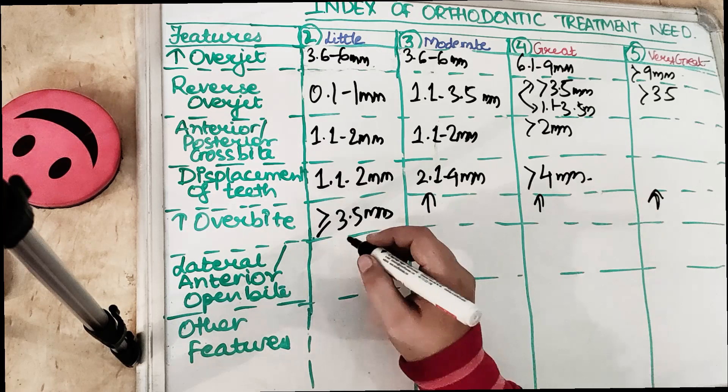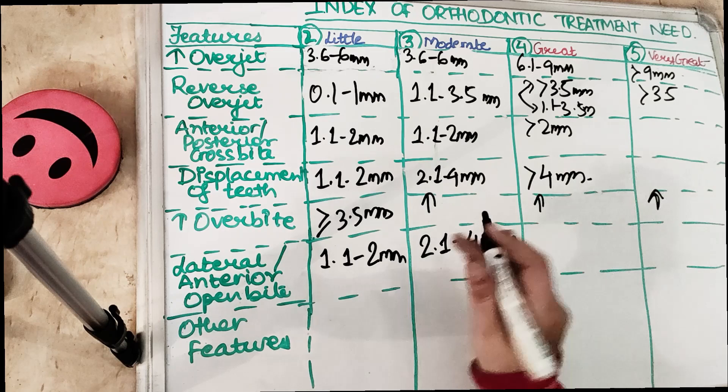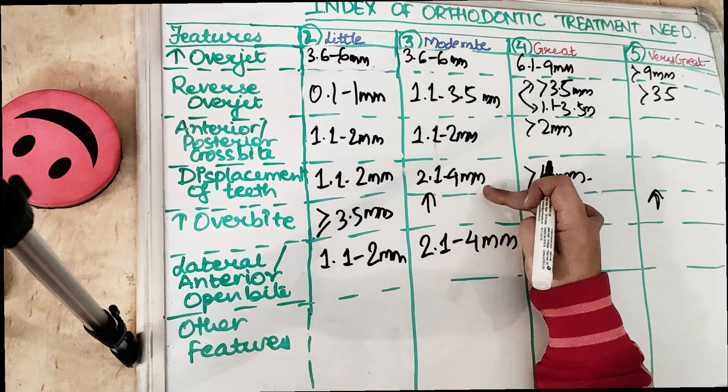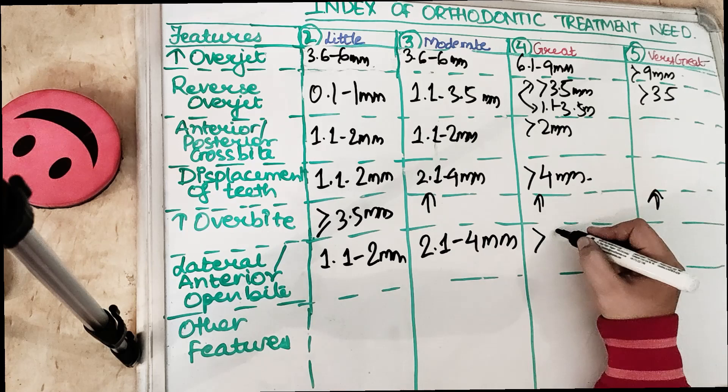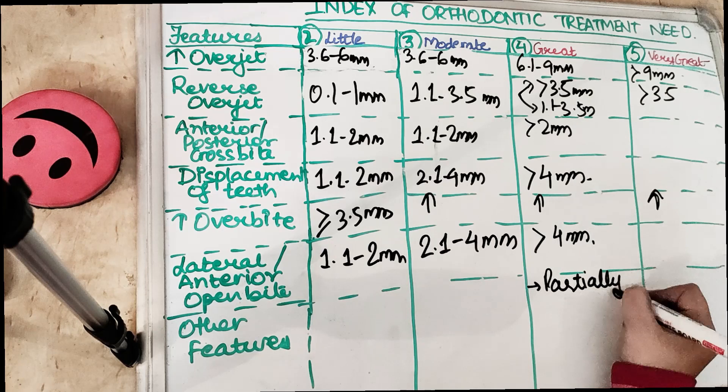For lateral or anterior open bite: Grade 2 is 1.1 to 2 millimeters; Grade 3 is 2.1 to 4 millimeters. The displacement of teeth follows the same measurements — 1.1 to 2 millimeters for Grade 2 and 2.1 to 4 millimeters for Grade 3. Grade 4 is an extreme open bite greater than 4 millimeters. Additionally, partially erupted or impacted and tipped teeth present also fall under Grade 4.